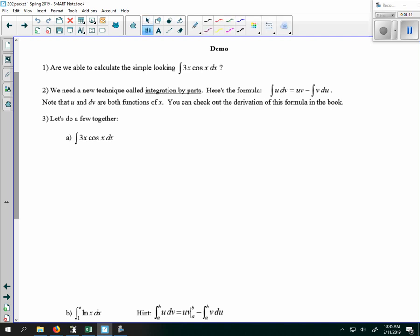So we'll do a few together. We have to choose a u and a dv from the product that I'm given in my integrand. So this is 3x and cosine x, and I have to choose what's going to be u and what's going to be dv. So this is my first step. They're each going to be a factor of the integrand.